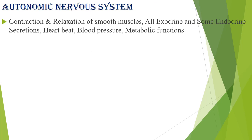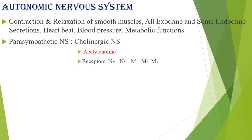The autonomic nervous system is directly involved in contraction and relaxation of smooth muscles, exocrine and endocrine secretions, heartbeat, blood pressure, and certain metabolic functions. The parasympathetic nervous system is also called the cholinergic nervous system because its main neurotransmitter is acetylcholine. Since there is a neurotransmitter, there must be receptors for it to bind with in order to give a response.